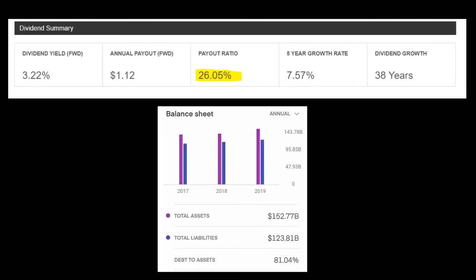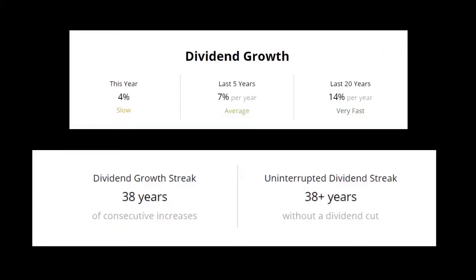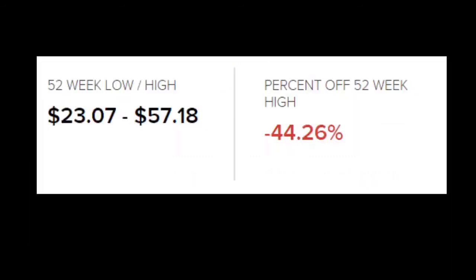What happens when liquidity increases? High liquidity means more money is in circulation, so people have a tendency to spend more. This leads to inflation in an economy as the circulation of money increases but productivity remains the same. High liquidity also leads to a weakening of the domestic currency with respect to international currency.